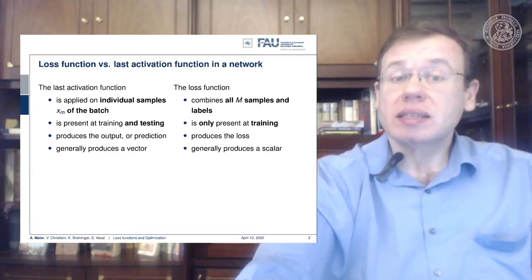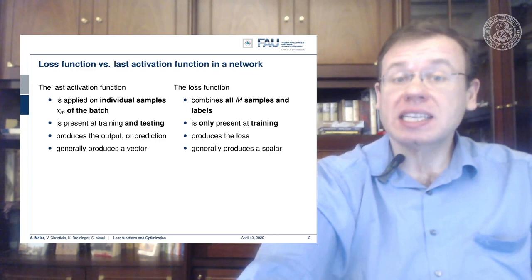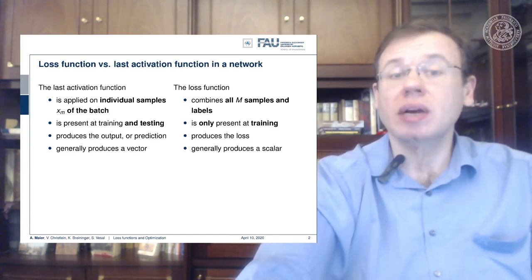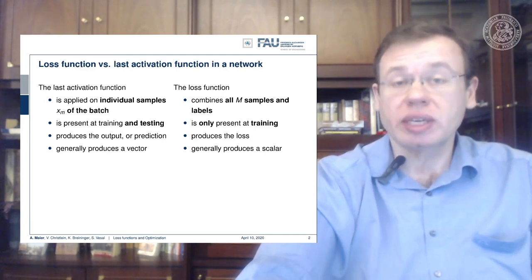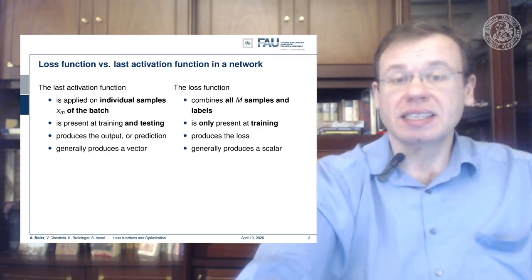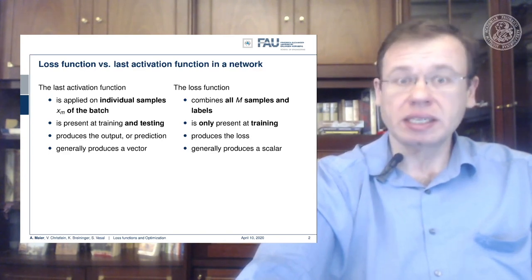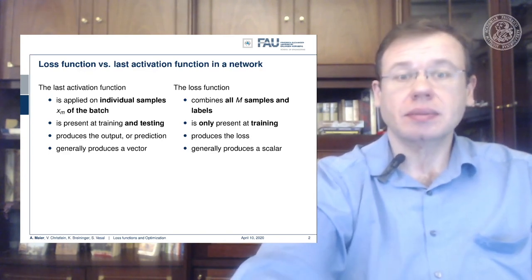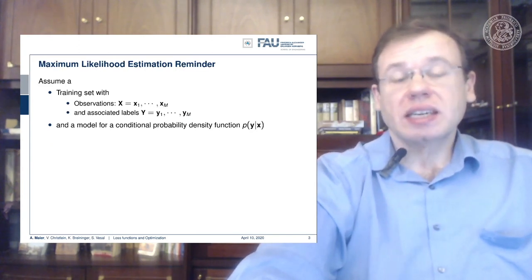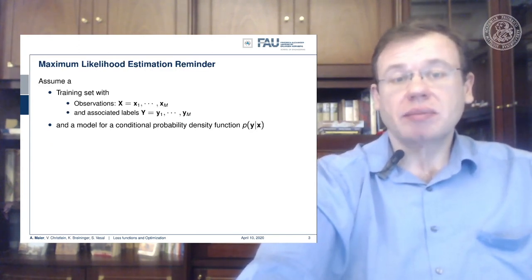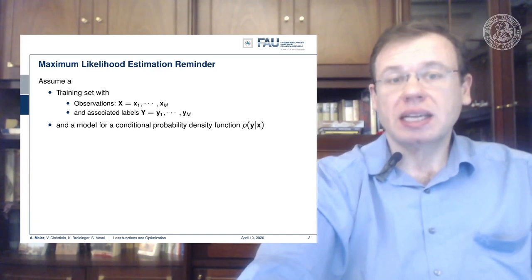The loss function combines all m samples and labels, and in their combination they produce a loss that describes how good the fit is. It's only present during training time, and this loss is generally a scalar value. Interestingly, many of those loss functions can be put in a probabilistic framework, and this leads us then to maximum likelihood estimation.